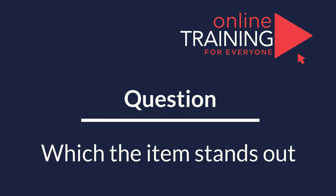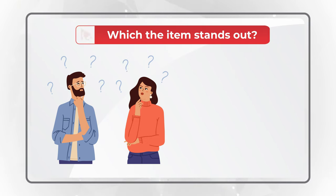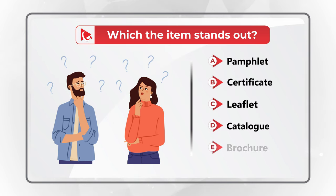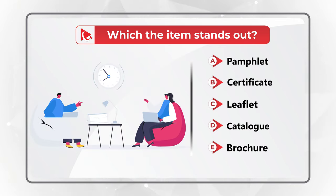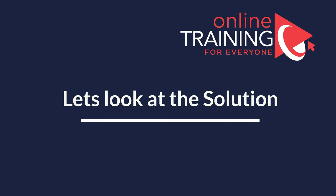Here's an interesting question which tests your knowledge of words as well as your verbal reasoning skills. You're presented with five different words and you need to determine which item stands out. The words are: pamphlet, certificate, leaflet, catalog, and brochure. Do you know which item stands out? Give yourself a few seconds — maybe pause this video to come up with the solution.